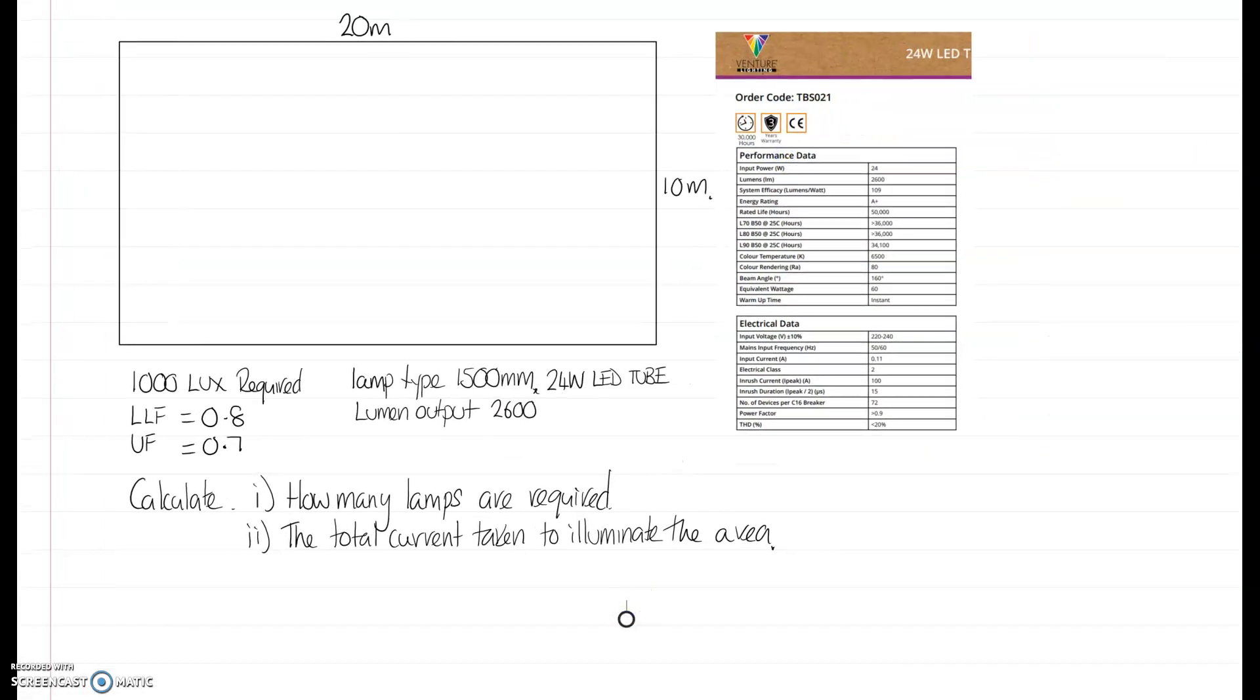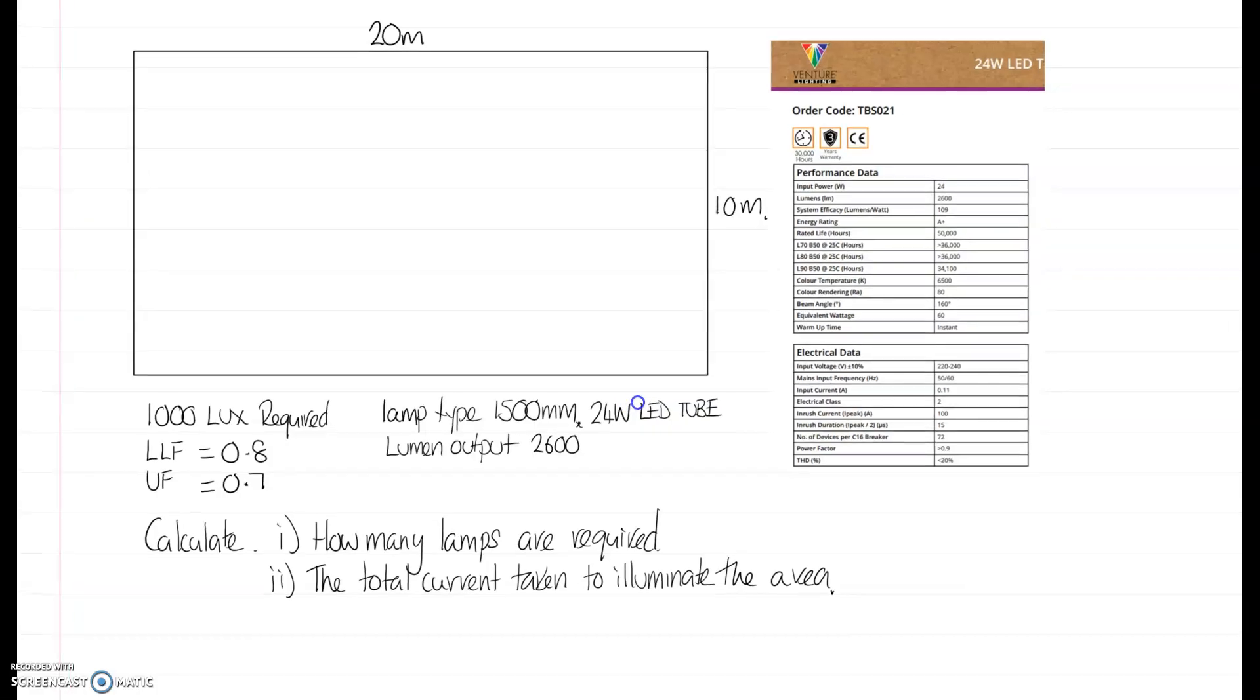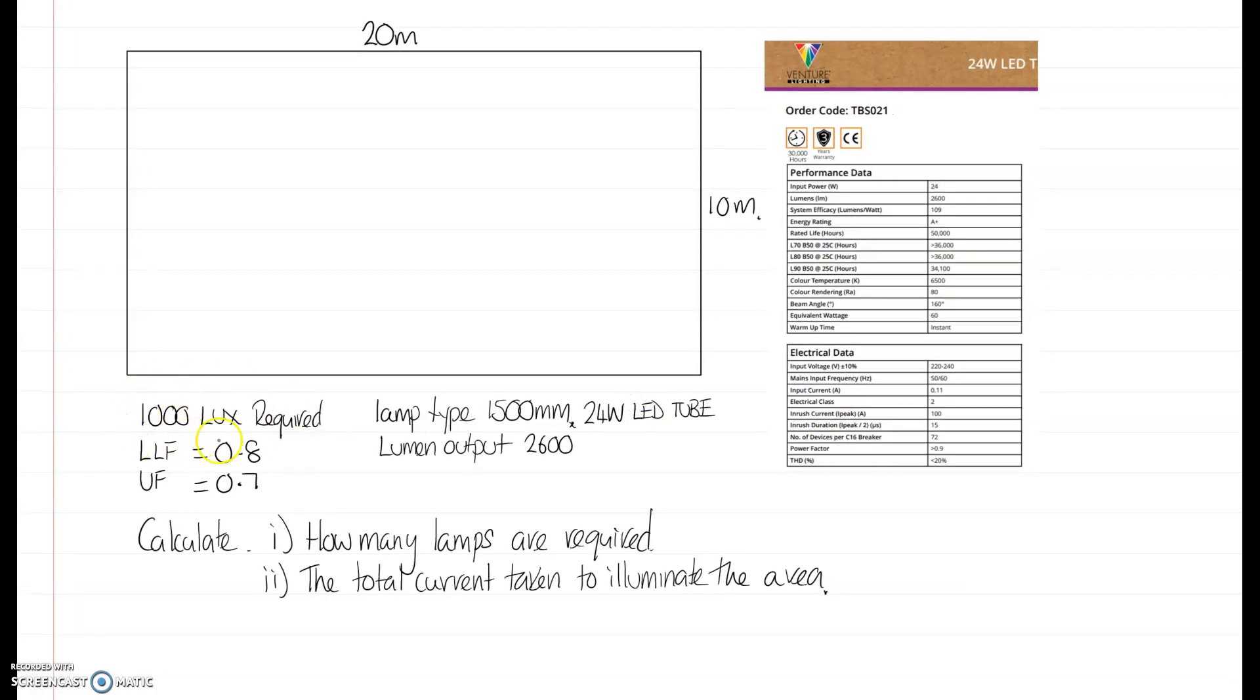First thing we need to do is work out how many lamps are required, and we're going to work out the total current taken to illuminate the area. So the data: we need 1,000 lux in this area, light loss factor is 0.8, that is a little bit steep but I'm setting it at 0.8 anyway, and the utilisation factor is 0.7. First thing we do is write our formula down and do the maths.